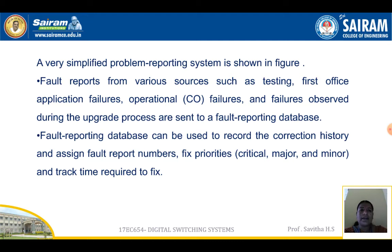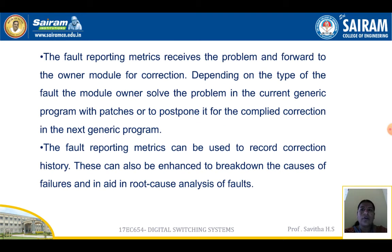In the system, faults reported from various sources — such as testing, first office application failures, operational failures, and failures observed during the upgrade process — are sent to a fault reporting database. This database records correction history, assigns fault report numbers, fixes priorities (critical, major, and minor), and tracks the time required to fix faults.